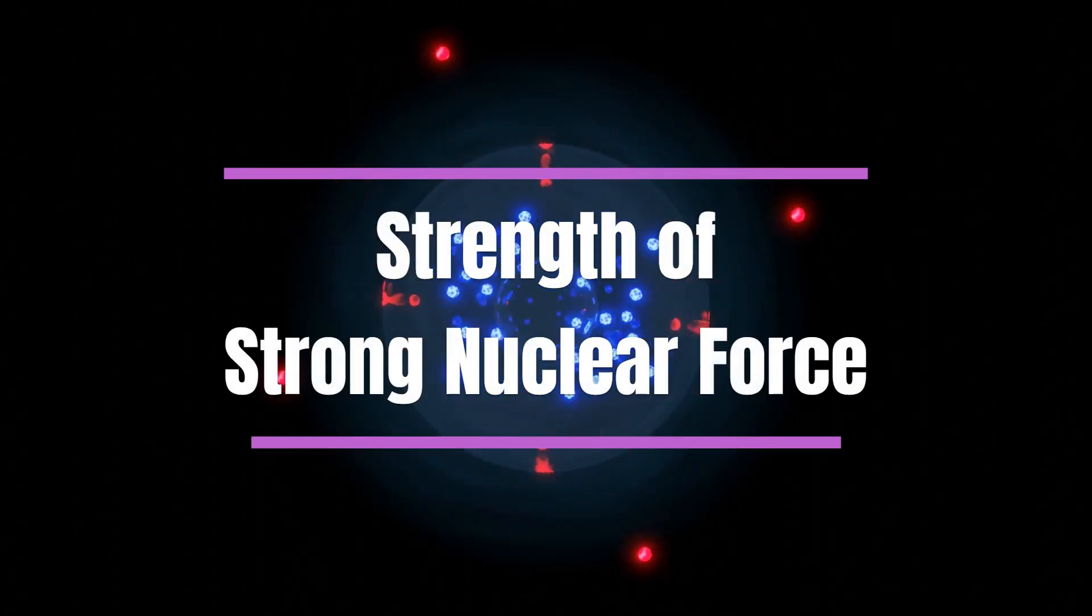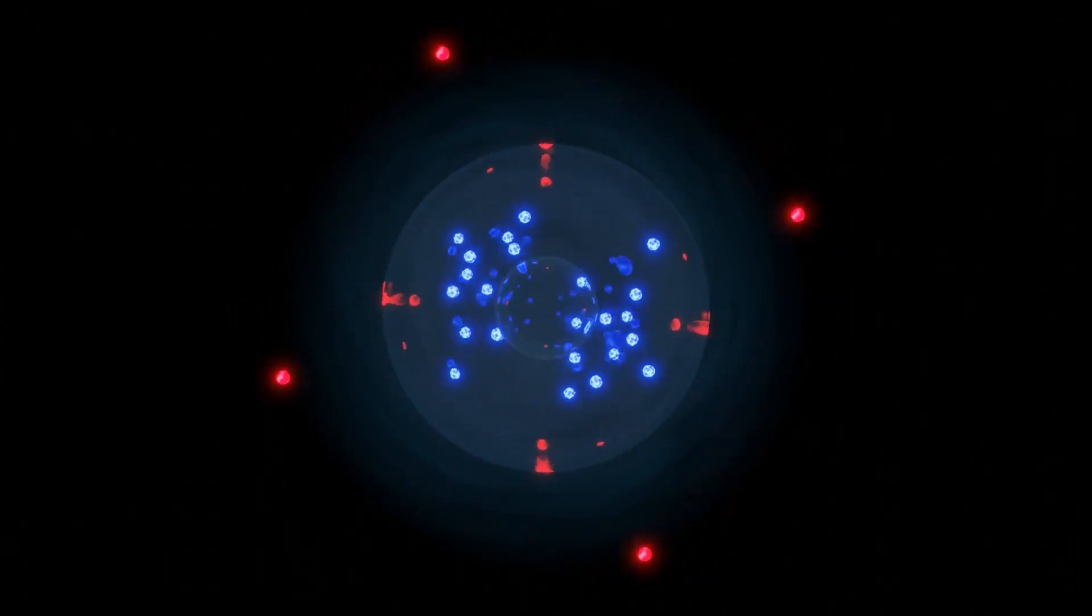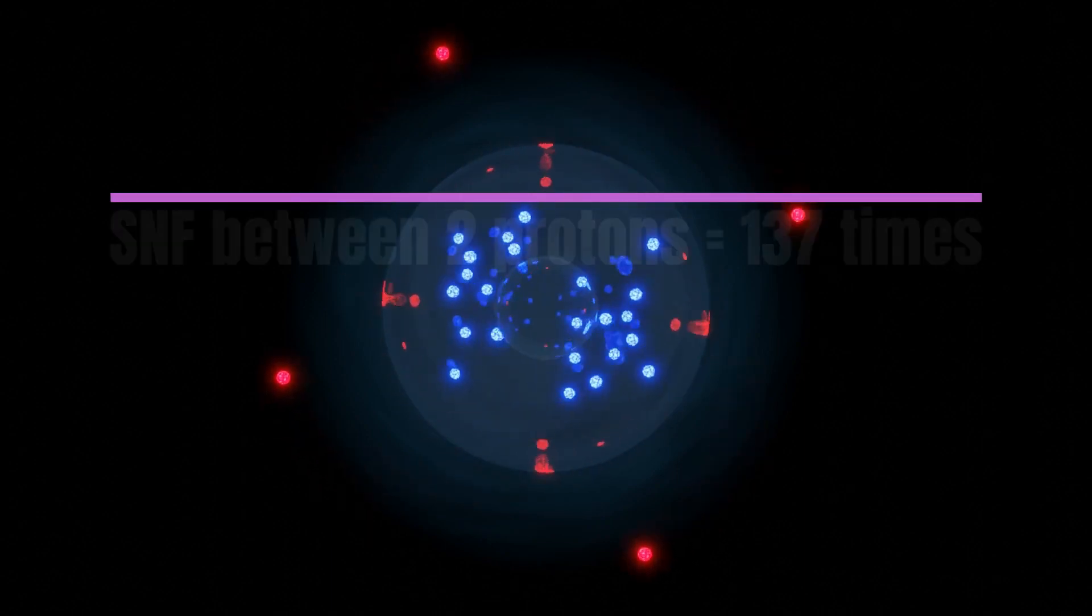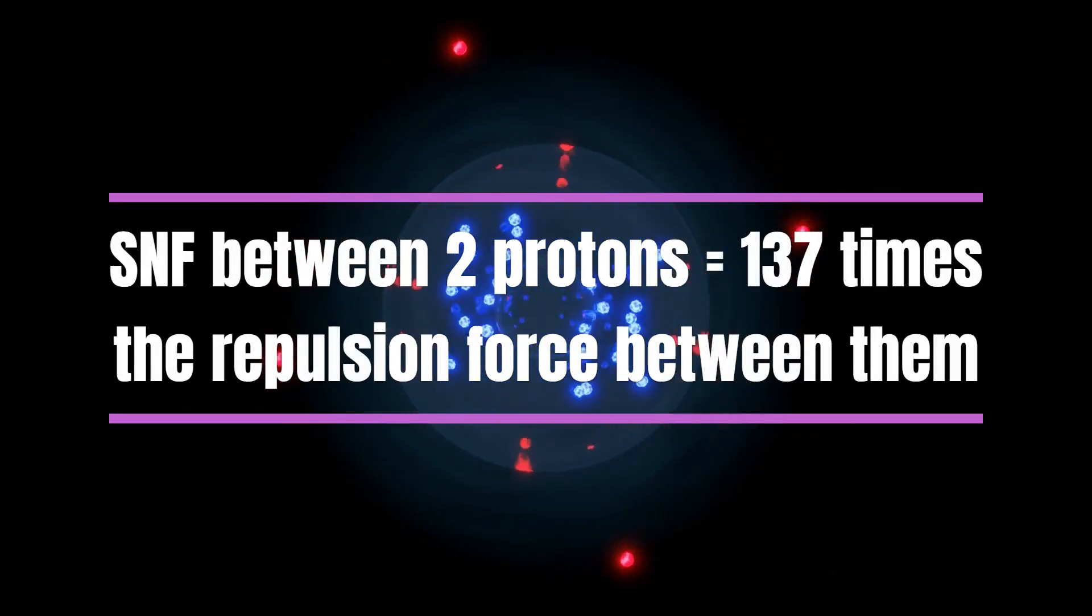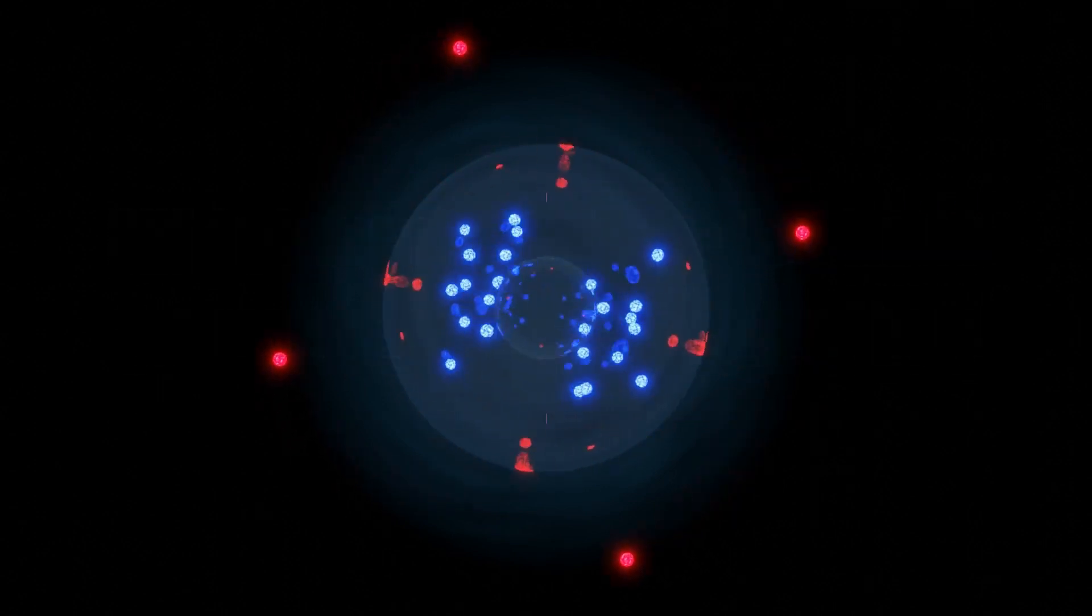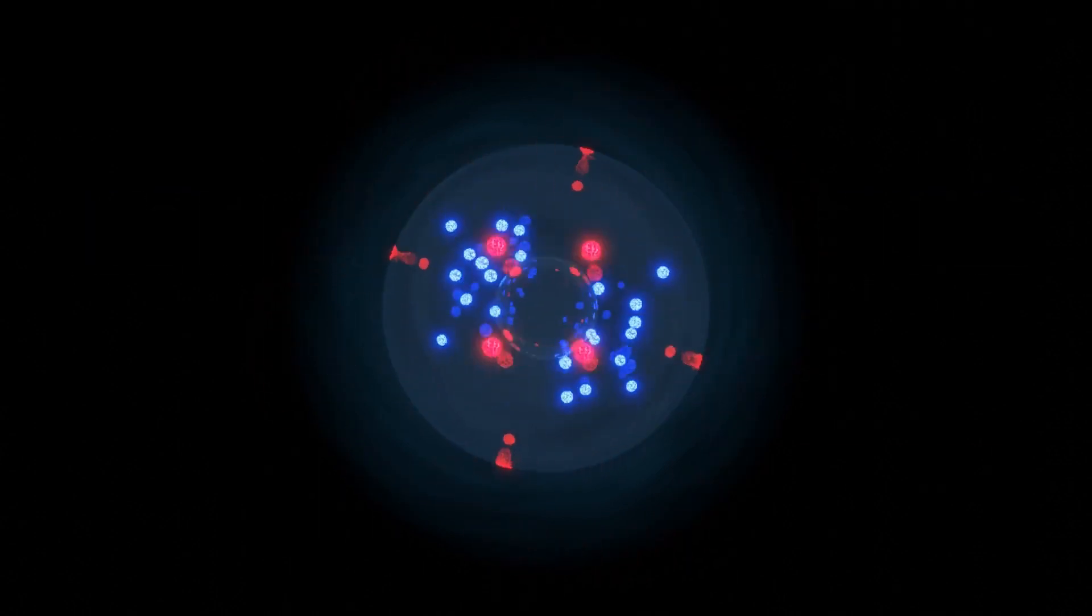Now, let's talk about the strength of the strong nuclear force. To say the least, it's incredibly strong, hence the name. To put it into perspective, the strong nuclear force between two protons is about 137 times the strength of electromagnetic force between them. This is why the strong nuclear force can overcome the electromagnetic repulsion between protons and hold them together in the nucleus.